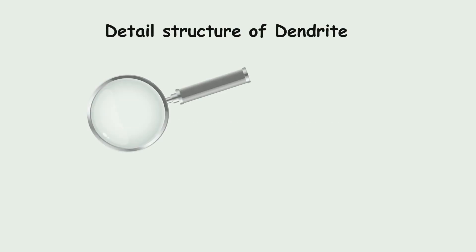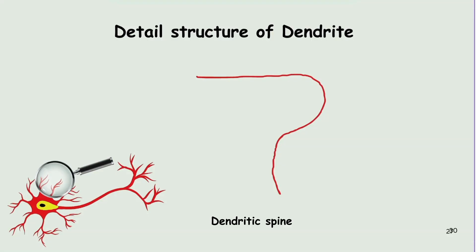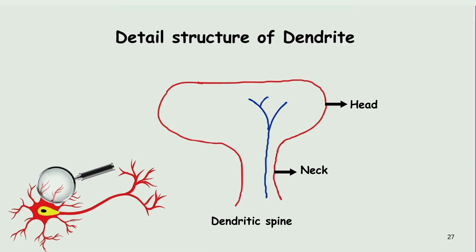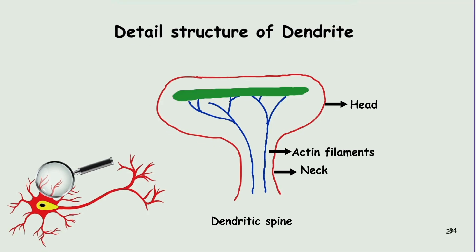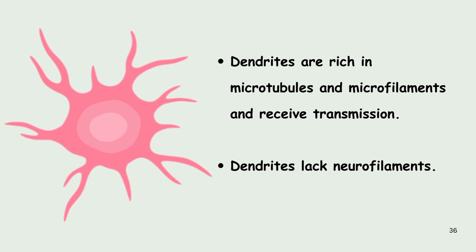Now let us deep dive into the detailed structure of the neuron. First, let us see the detailed structure of a dendrite. When we look closely at the dendritic cell of the neuron, we find that it is made up of dendritic spines, which are further divided into the dendritic neck and dendritic head. These dendritic spines have actin filaments, which are connected to the receptors. When these receptors become active from an external stimulus, it transmits the signal throughout the filament. Dendrites are rich in microtubules and microfilaments — that is, actin filaments — and they receive the transmission, but dendrites lack neurofilaments.